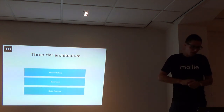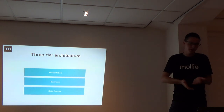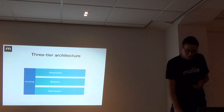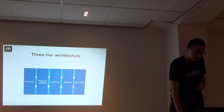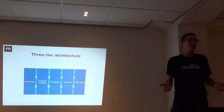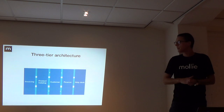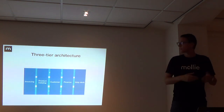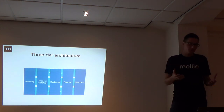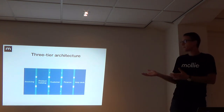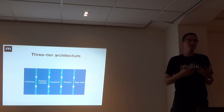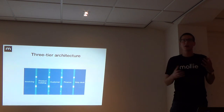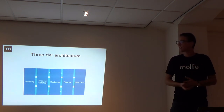Instead of slicing things horizontally like the three-tier architecture, we should slice things vertically. For example, invoicing, product - if you have your product and your teams organized this way, then you can have teams that are completely autonomous in their handling. They can become experts on their own subject, and they can be autonomous in deploying a feature because they don't need someone from another team. Everyone needed to release that thing is already there.